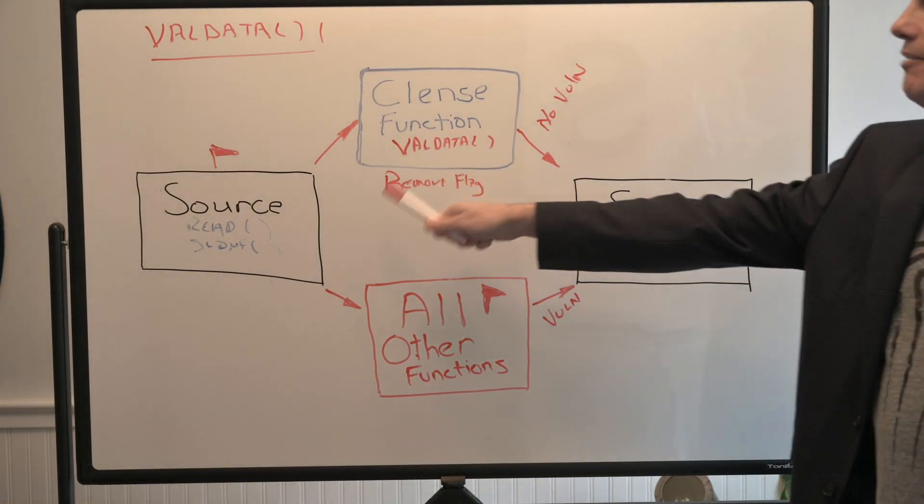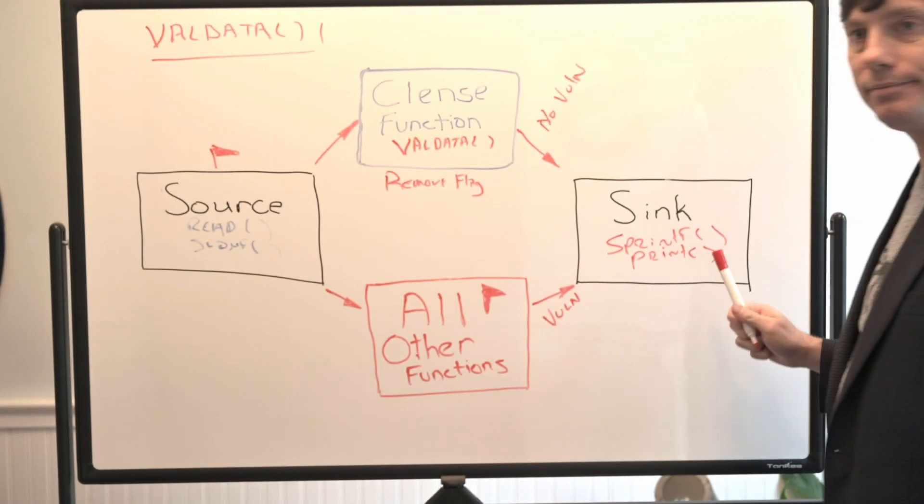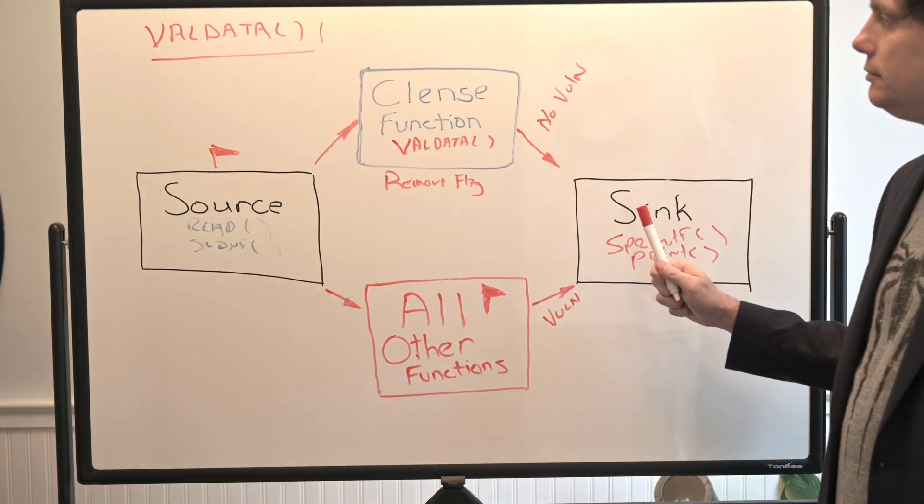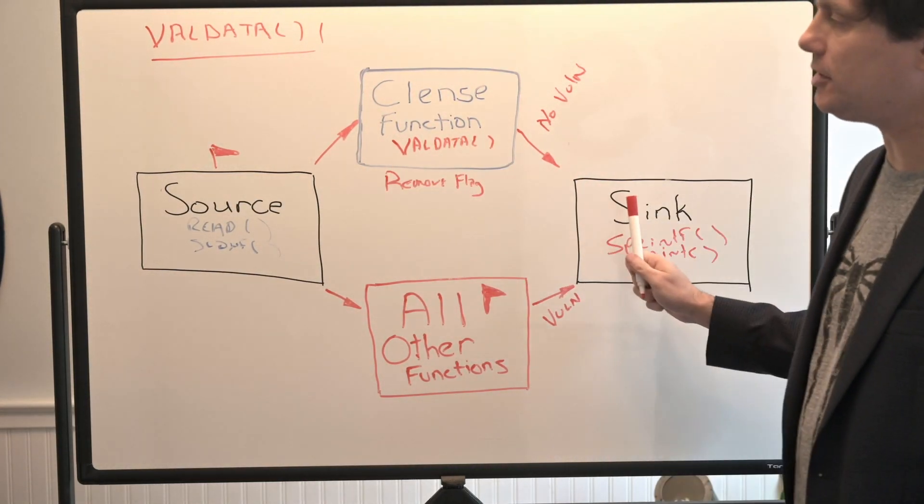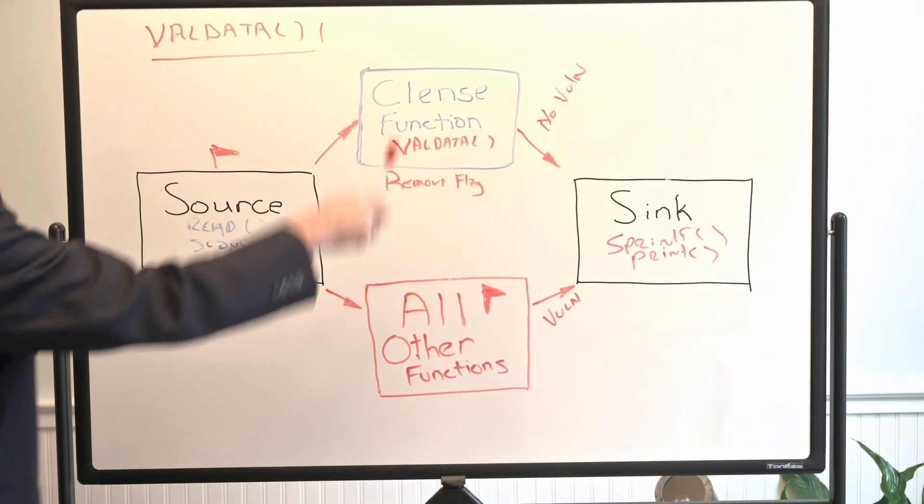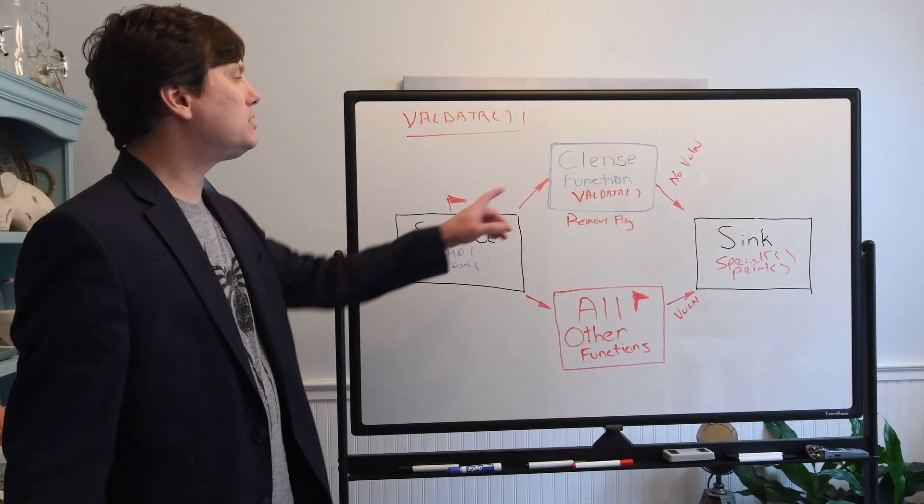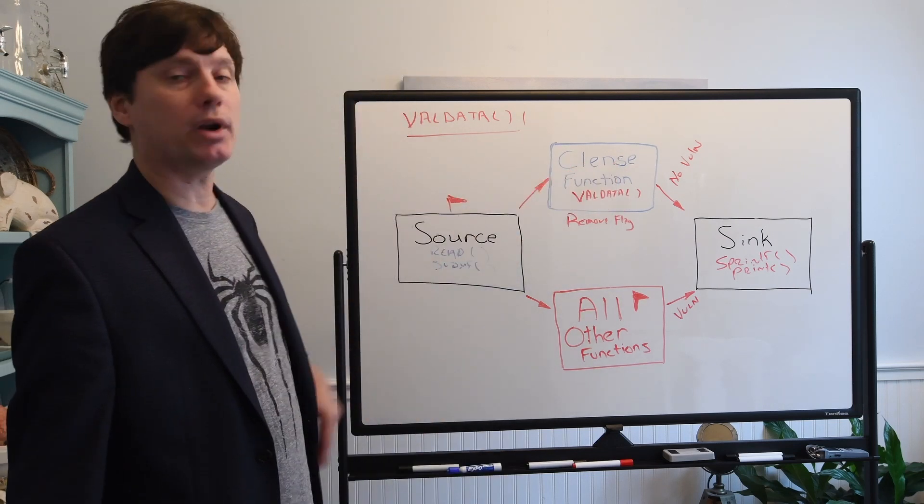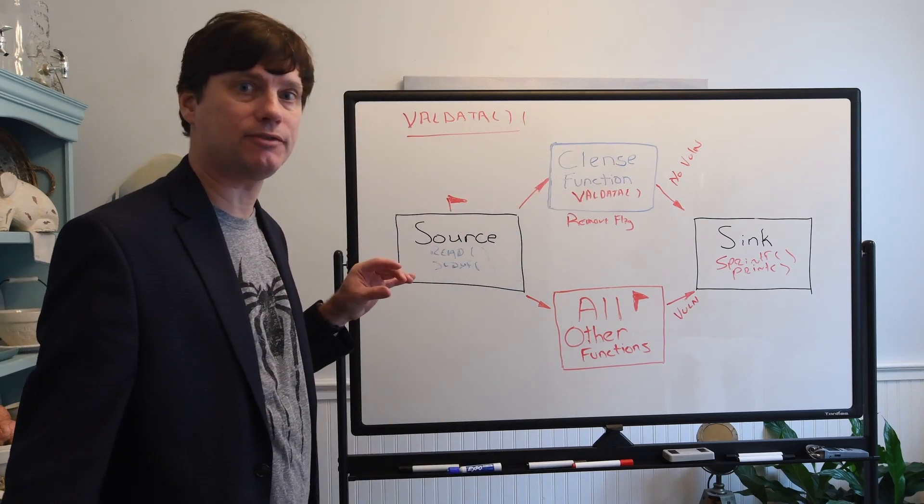And the cleanse function doesn't have to be the only function in between. There can be a series of functions because the data flow analyzer is going to follow your source all the way through your code as long as it passes through the cleanse function. And this is important. It has to return the value of the cleanse function.